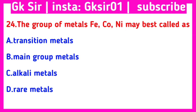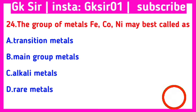Question number 24. The group of metals — iron, Co, nickel — may best be called as: Option A: transition metals, Option B: main group metals, Option C: alkali metals, Option D: rare metals. The correct answer is Option A: transition metals.